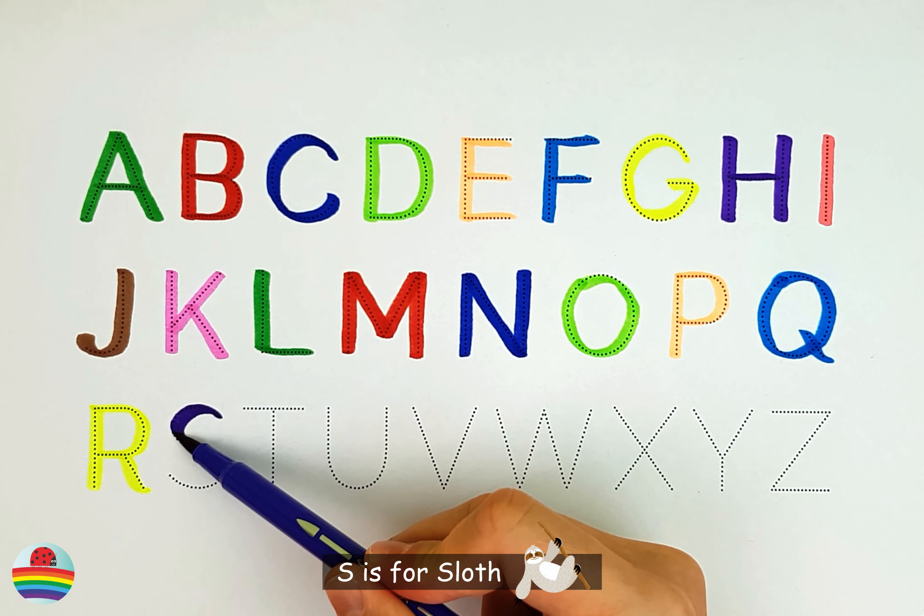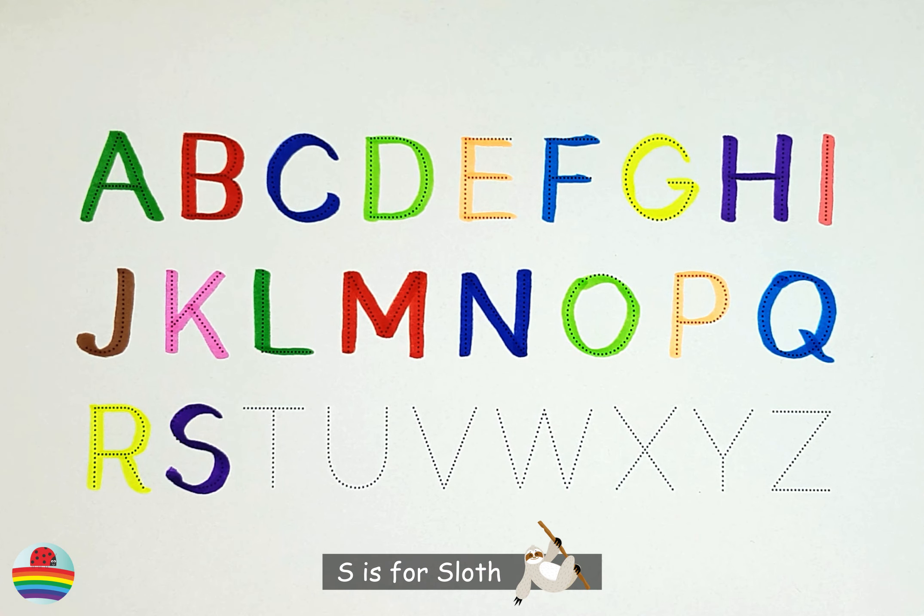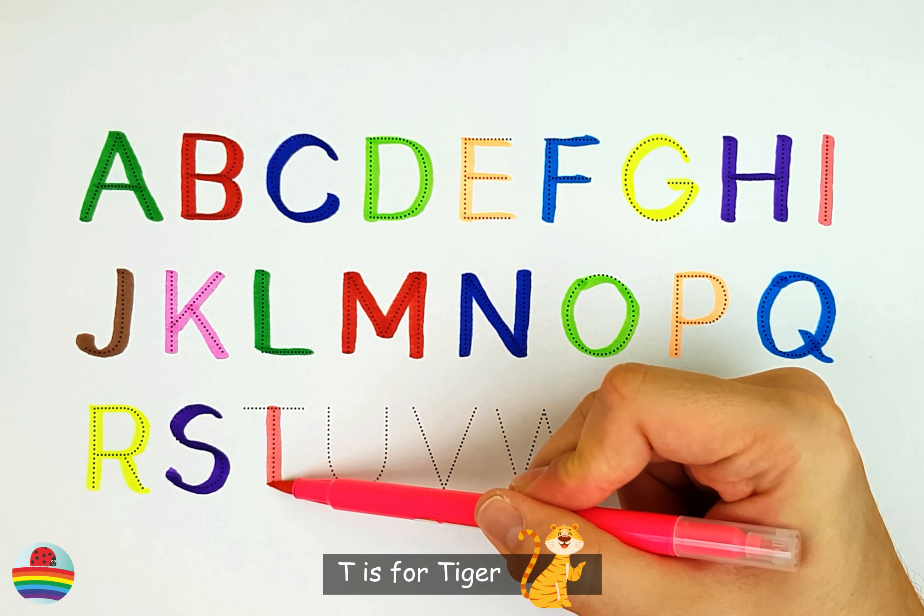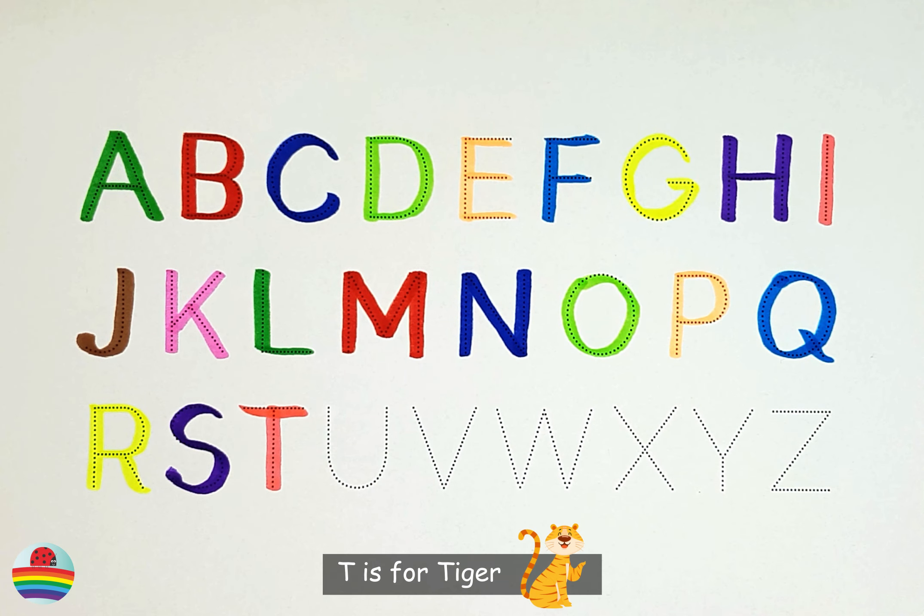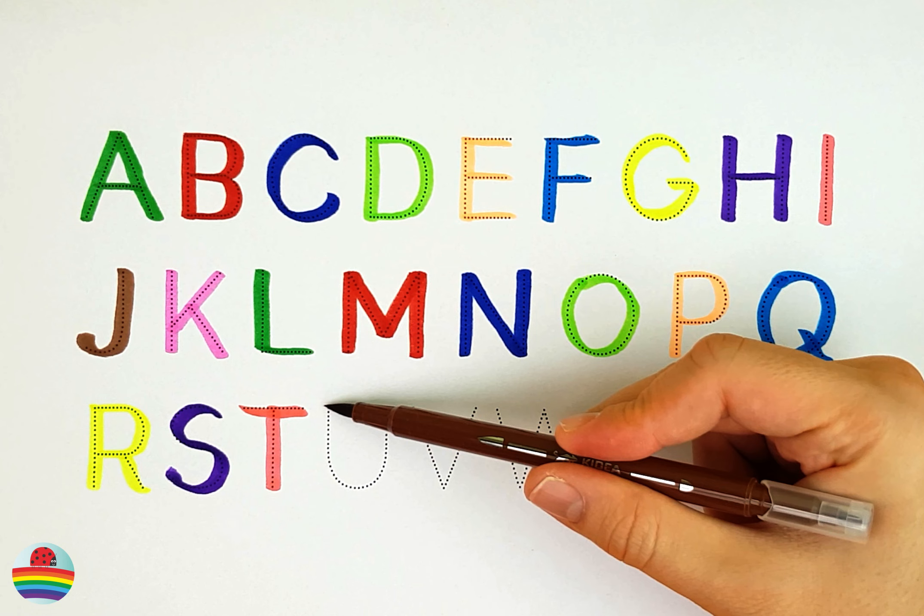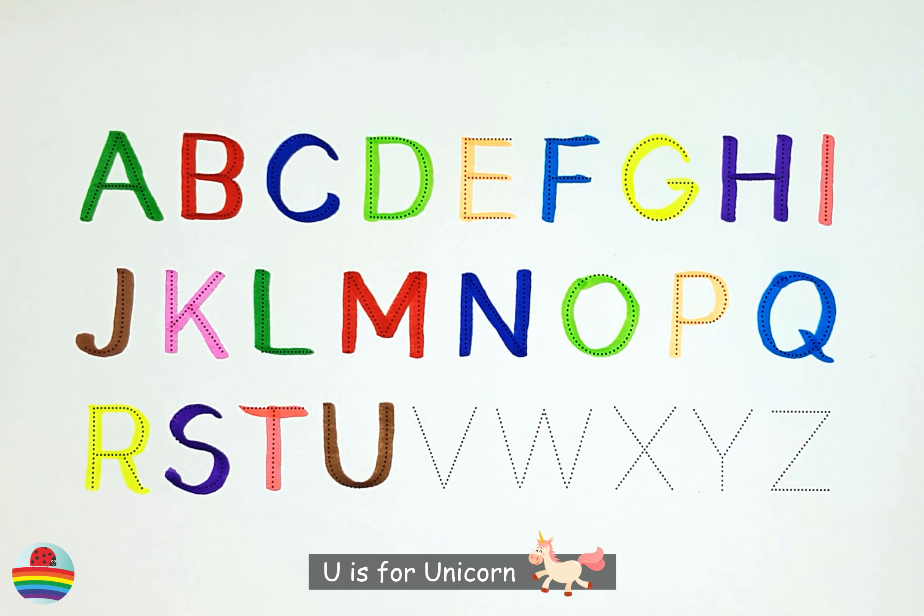S. S is for Sloth. T. T is for Tiger. U. U is for Unicorn.